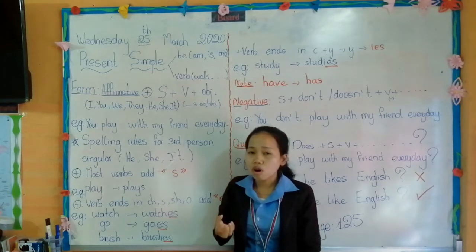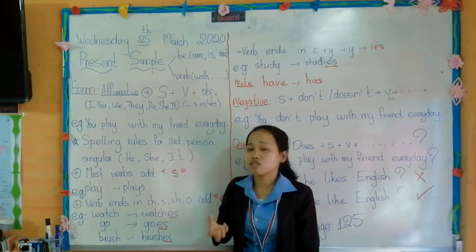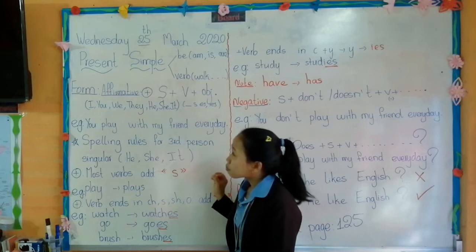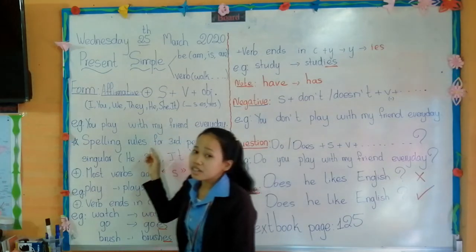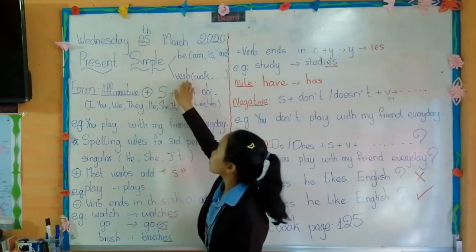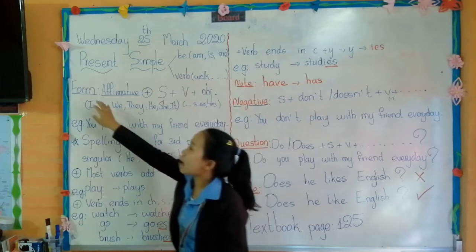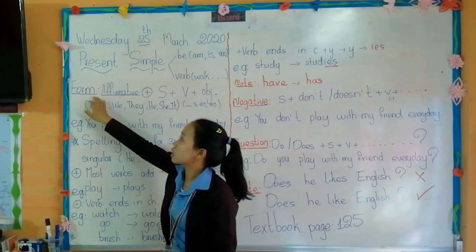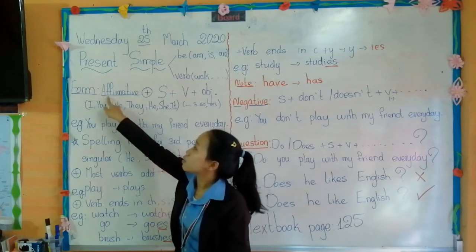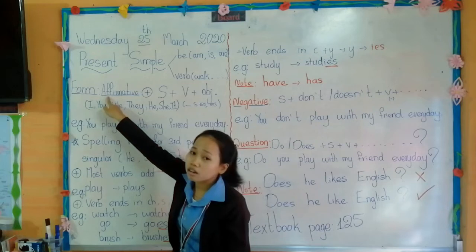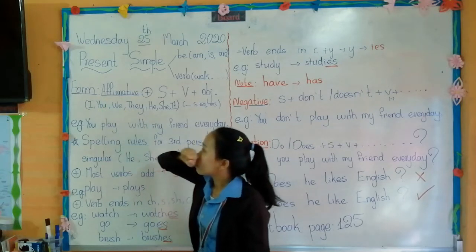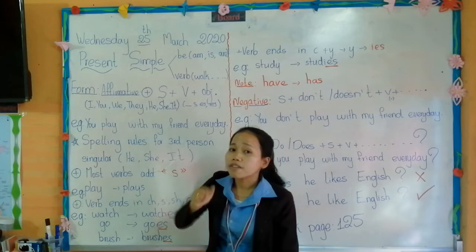For example, action verbs like walk, run, jump, swim. This lesson, we just focus on present simple with verb only. And we have the formula. So the first formula, we are going to focus on present simple affirmative form.